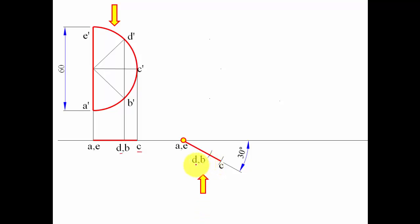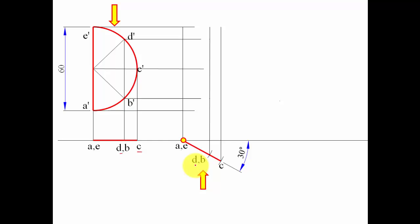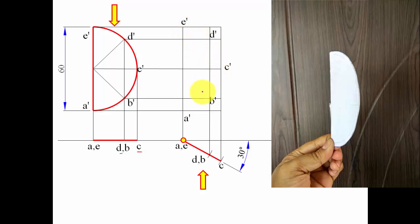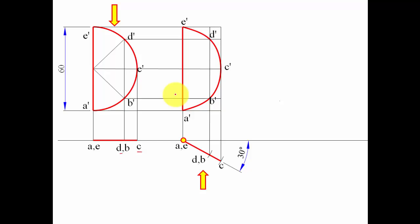Now we look at the object from the front. For each point, find the vertical projector from the top view and the horizontal from the front view — their intersection gives the new front view point. For example, the vertical for c meets the horizontal for c at the intersection point. Working out all remaining points and joining them with a smooth curve gives the step two front view.